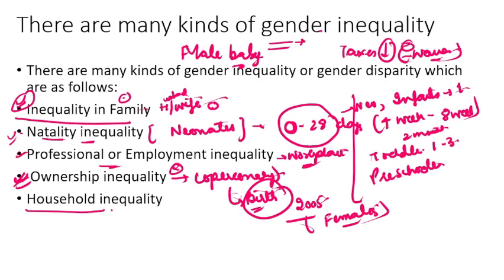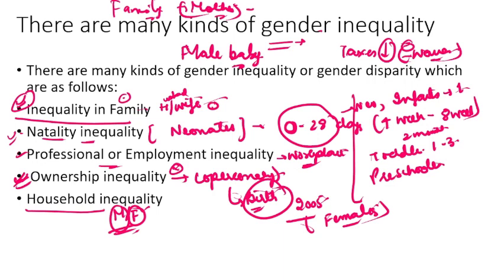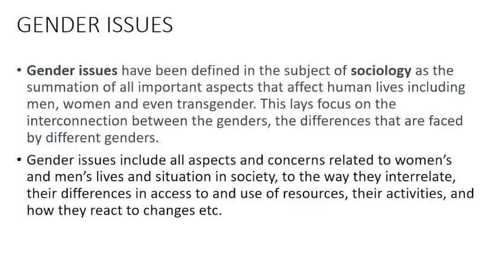Household inequality वो है जो आप अपने माँ और पापा के conduct में देखते हो — वहाँ से ही inequality start हो जाती है। अगर आपको women empowerment start करनी है, आपको वो अपनी family से करनी होगी। जब तक family unit में empowerment की बात न करो, तब तक society में women empowerment नहीं आ सकती। तो ये कुछ types of gender inequalities हैं जो daily basis पे हम face करते हैं।